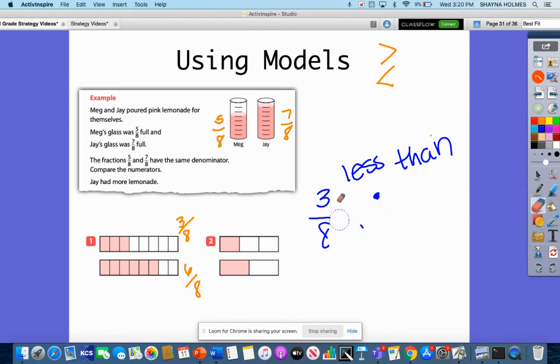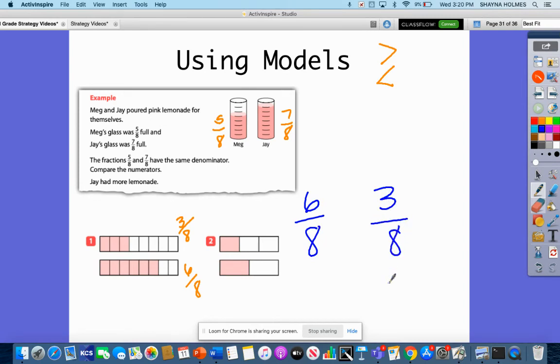Now, what if I wanted to turn this around? What if I had 6/8 and 3/8? What would the symbol look like then? Now, remember, I'm just going to go back. I've got 3/8 here. I'm going to put that small dot. This is always going to point towards the larger fraction. So 6/8 is greater than 3/8.